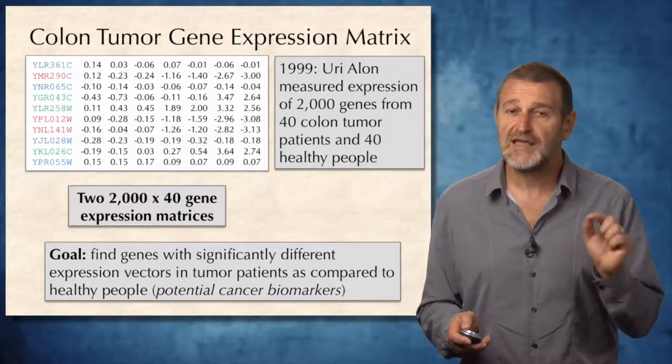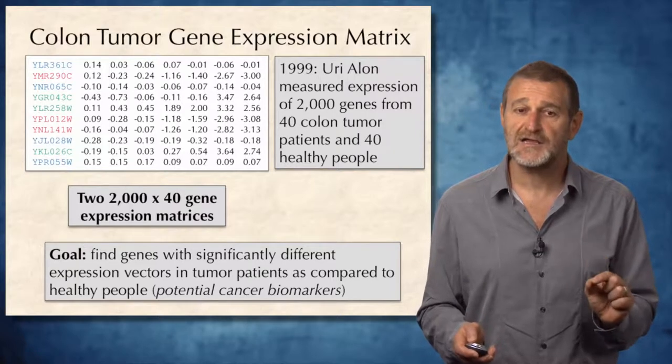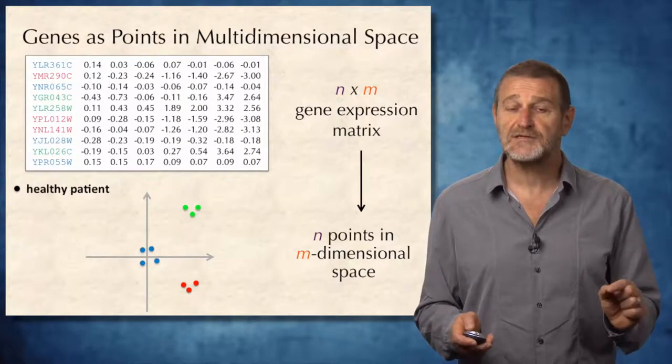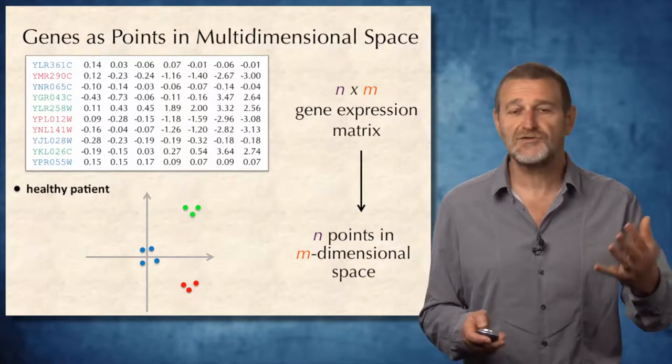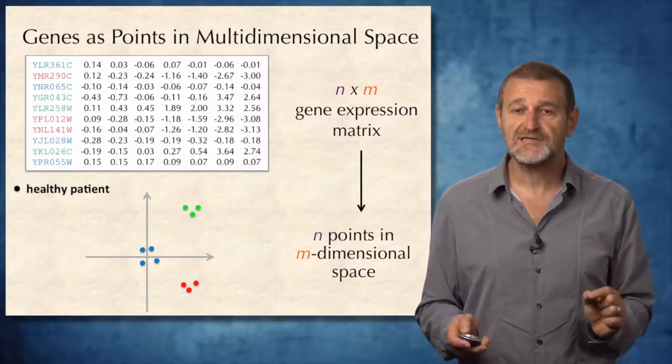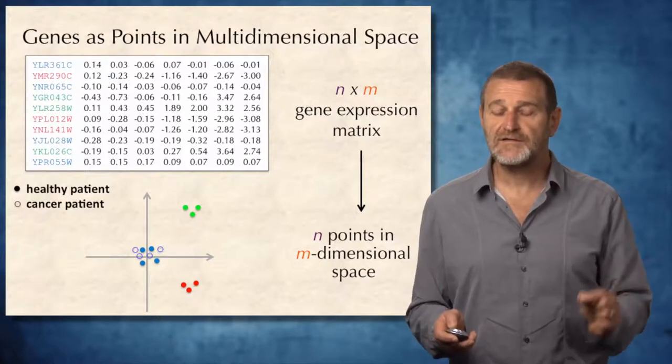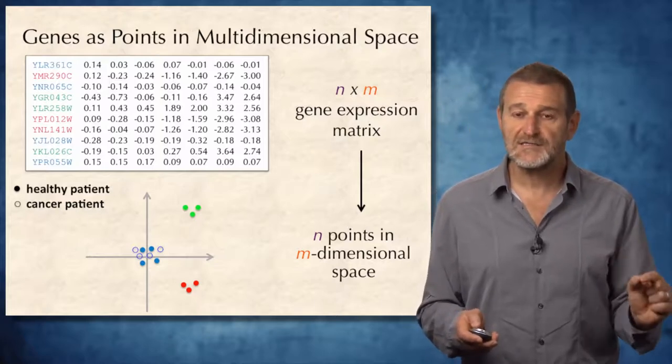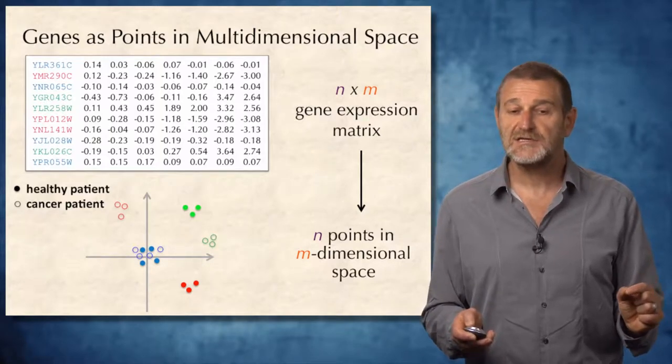These genes, if found, would represent potential cancer biomarkers that can be used for cancer diagnostics. If we look at the genes in the healthy patient in multidimensional space, then for these ten genes, we will see a picture like this. But if we superimpose it with the expression level for a cancer patient, represented by different type of circles, you see that for blue genes, expression level in cancer patients and in healthy patients are roughly the same. But in green genes and in red genes, they differ.